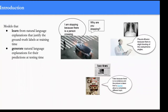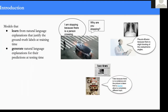Neural networks with natural language explanations are models that learn from natural language explanations justifying ground truth labels at training time, and can generate such explanations for their predictions at deployment. For example, a self-driving car could learn not only from the driver's actions but also from explanations of why those actions were taken, and at deployment could answer passengers' questions in natural language.